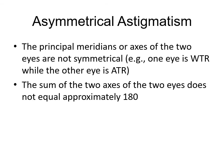Asymmetrical astigmatism means the principal meridians or axes of the two eyes are not symmetrical — the sum of the two axes does not equal approximately 180°. Regular and irregular astigmatism are types seen in one eye, whereas symmetrical and asymmetrical astigmatism refer to both eyes.